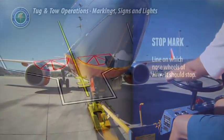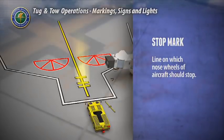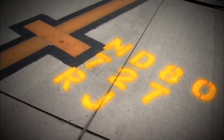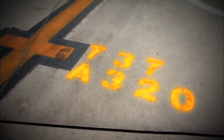The stop mark is the line on which the nose wheels should stop. The marshal will signal this to the pilot. This line may be along different areas of the lead-in line depending on the type of aircraft allowed at the gate. There may be multiple lines and there may be aircraft type indicators next to the appropriate line.